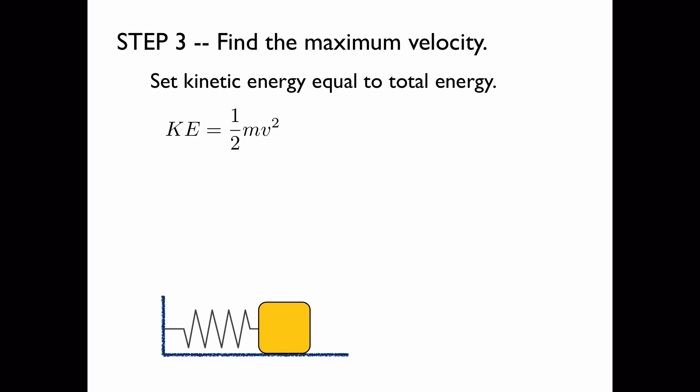We have the formula for kinetic energy. We set this equal to the value we just found. If we multiply both sides by 2 and divide by M, this implies that V squared is equal to this value. Plugging in our value for M, we get that V squared is equal to 0.2.